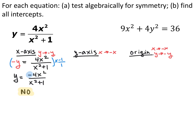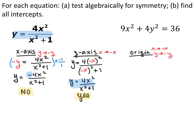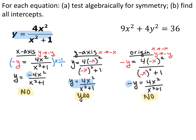For y-axis symmetry, I replace every x with negative x — put parentheses around it. I get y equals 4(−x)² over (−x)² plus 1. Since (−x)² equals x², this simplifies back to the original equation, so yes, it has y-axis symmetry. For origin symmetry, I replace both y with negative y and both x's with negative x. After squaring, I get negative y equals 4x squared over (x squared plus 1) — the same issue as x-axis symmetry — so this does not have origin symmetry. This equation only has y-axis symmetry.